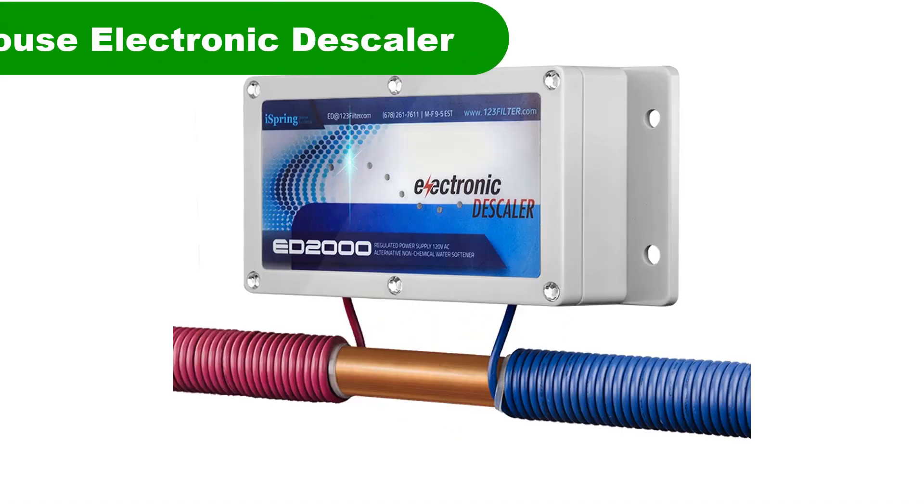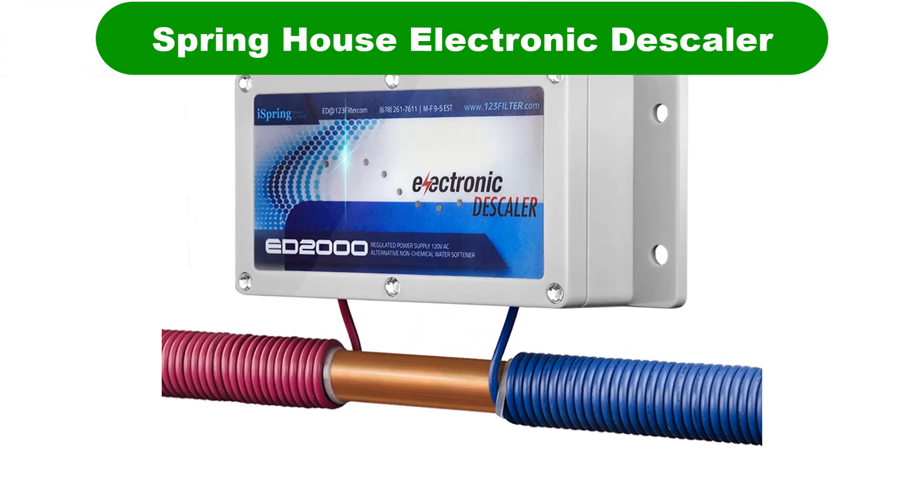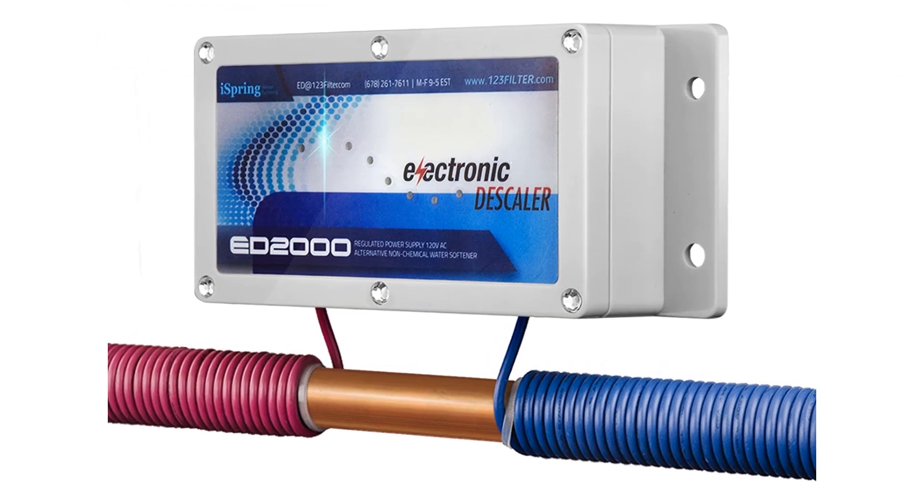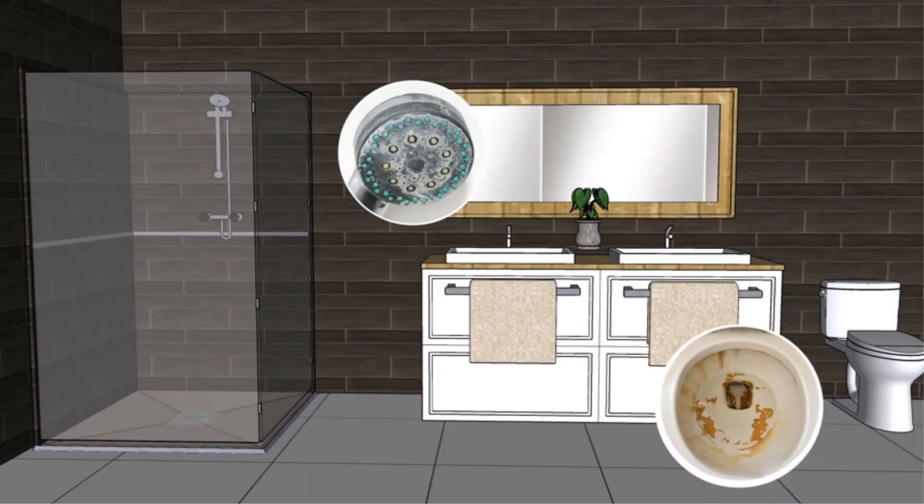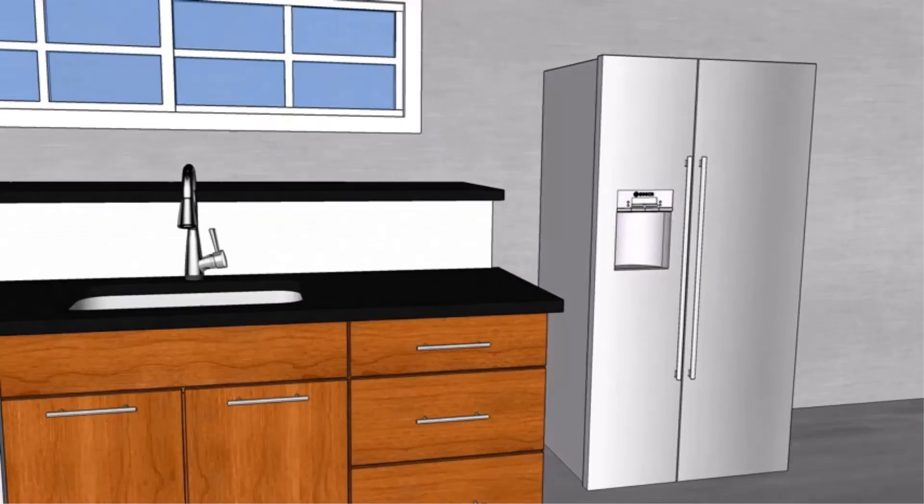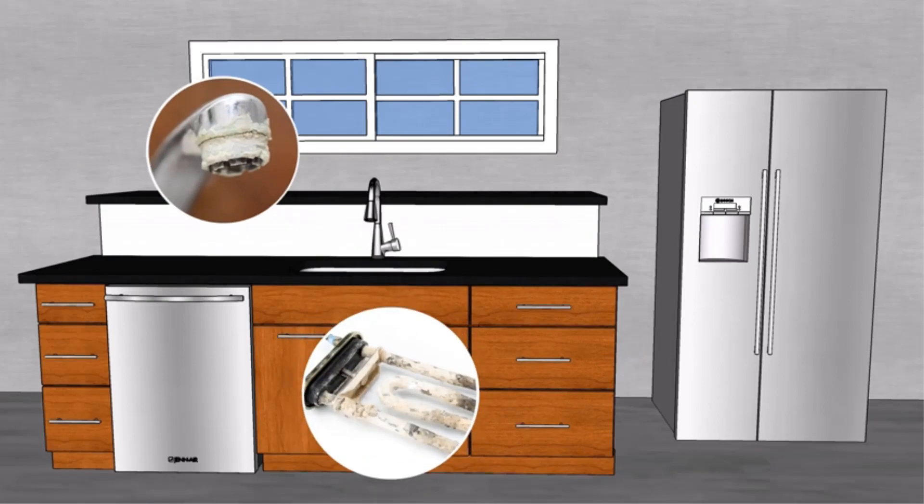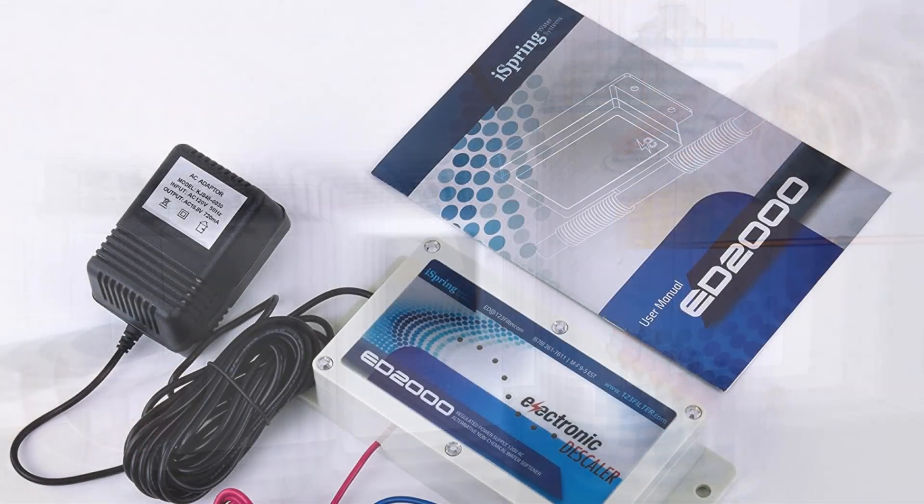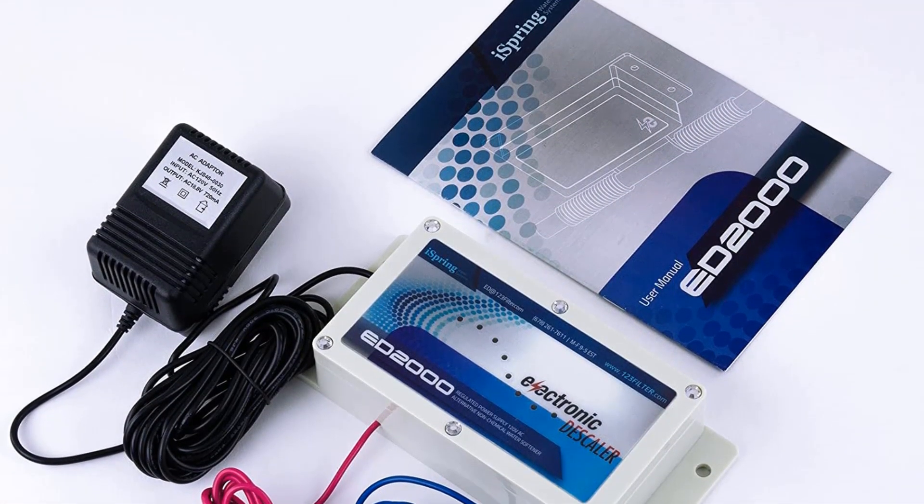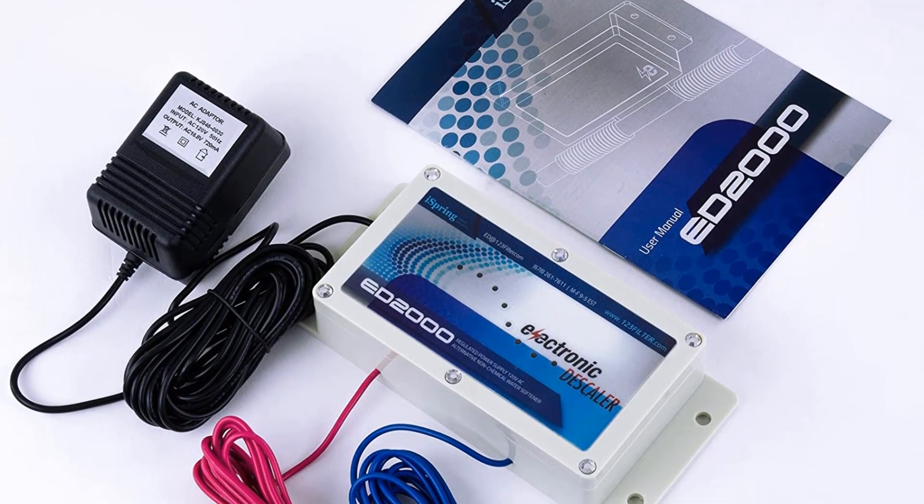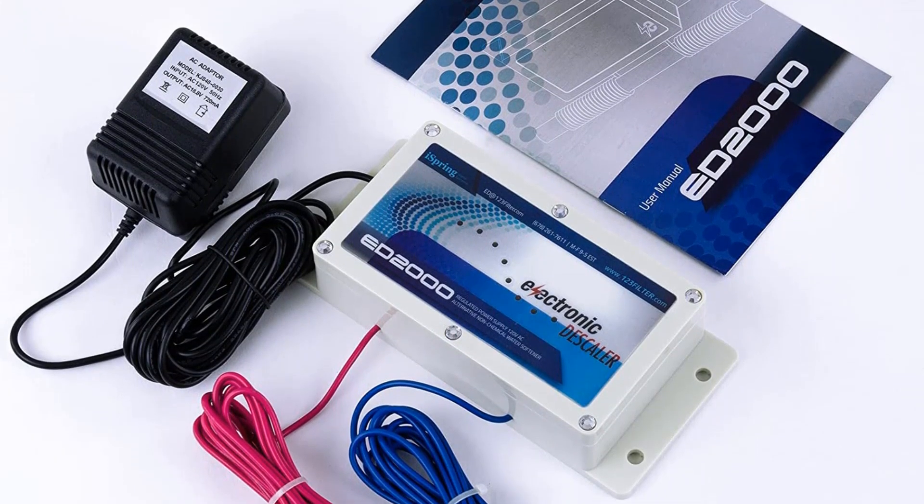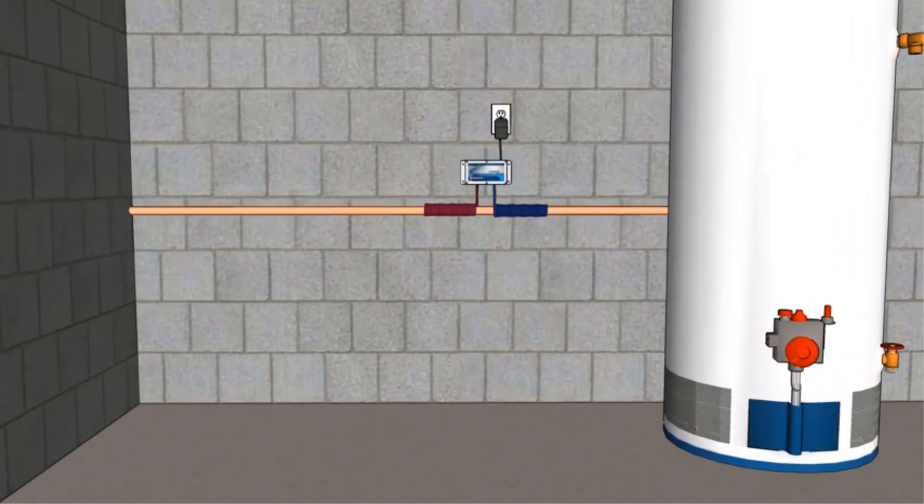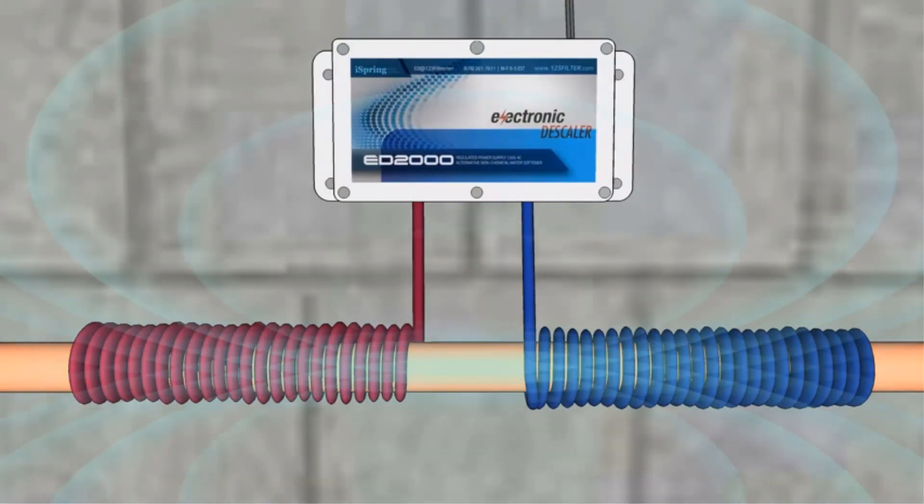Number 3. Last but not the least, our third best pick is iSpring ED2000 Whole House Salt-Free Electronic Descaler. Need to solve your hard water problems without using chemicals or salt? The iSpring ED2000 Electronic Water Softener might be a good option for you. This descaler erases all calcium deposits with zero salt and chemicals. The feature makes it convenient for people who have salt-restricted diets.